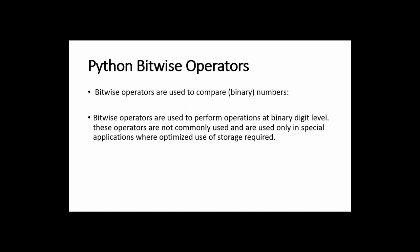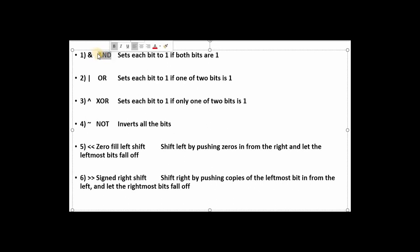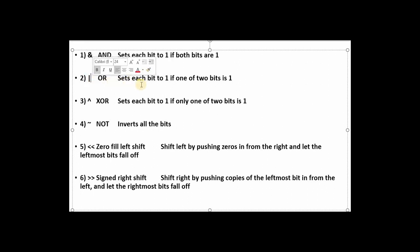These operators are not commonly used; they are used only in special applications where optimized use of storage is required. The AND operator is denoted with the '&' sign and sets each bit to one if both bits are one. The OR operator is denoted with the '|' sign and sets each bit to one if one of the two bits is one.